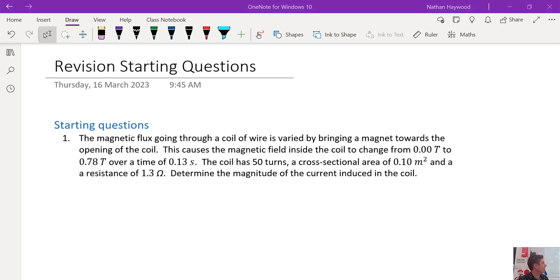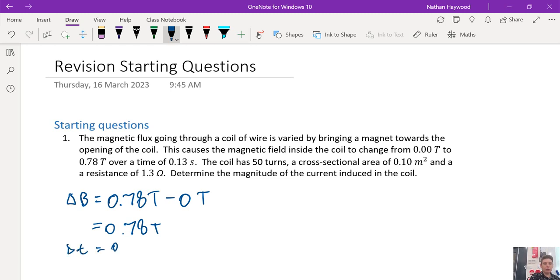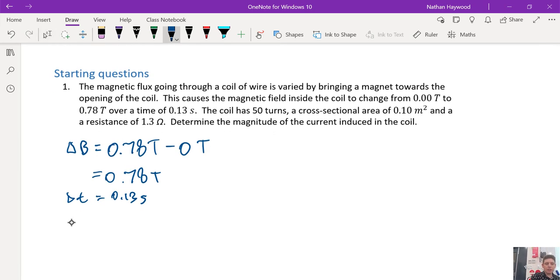Revision question, here we go. So there's a change in B, and the final is 0.78 T minus the initial. We've got a change in time, 0.13 seconds, gives us little n. Little n is the number of turns.